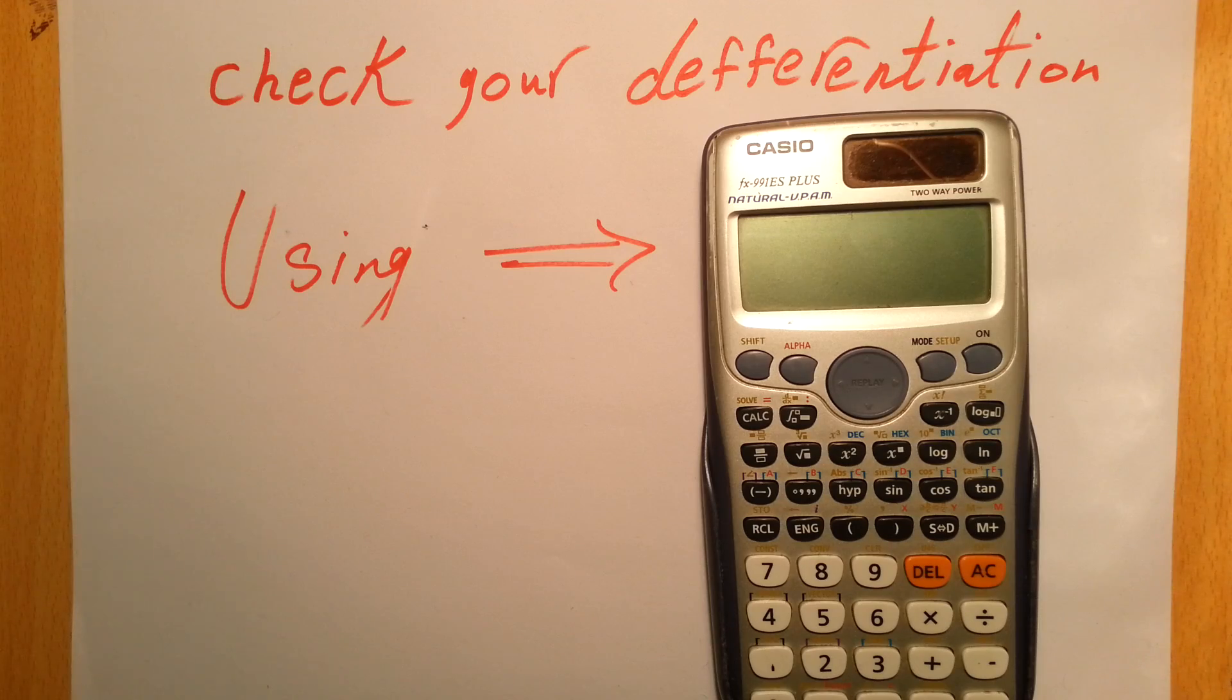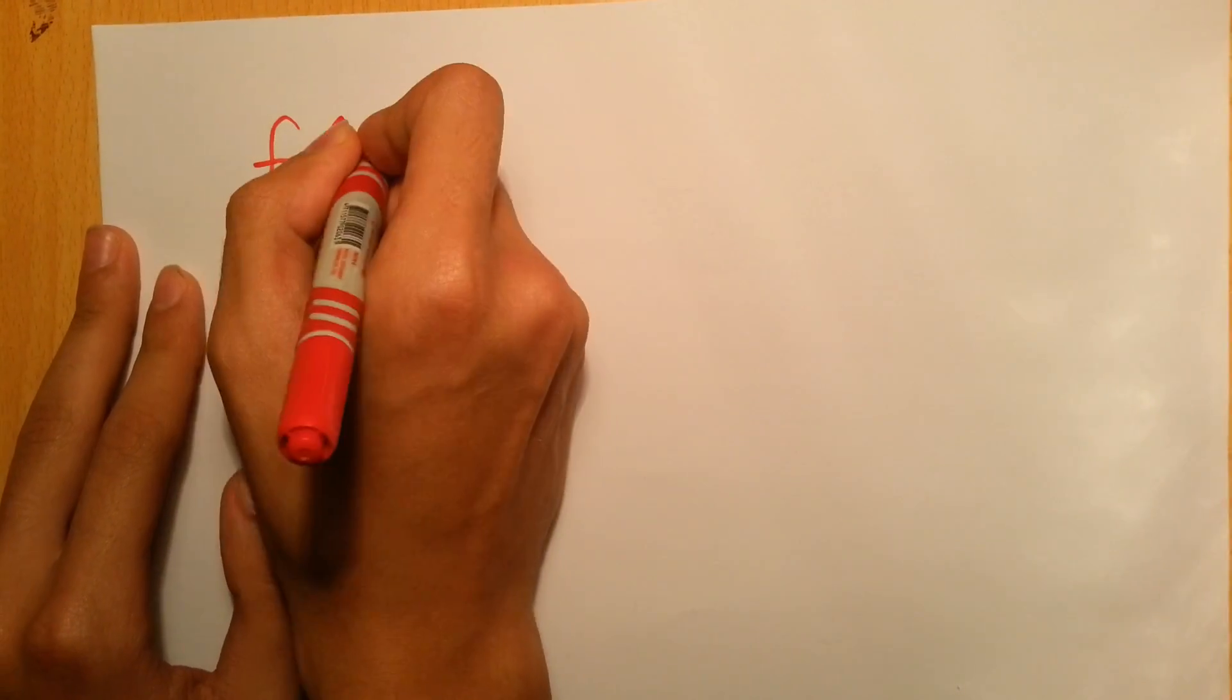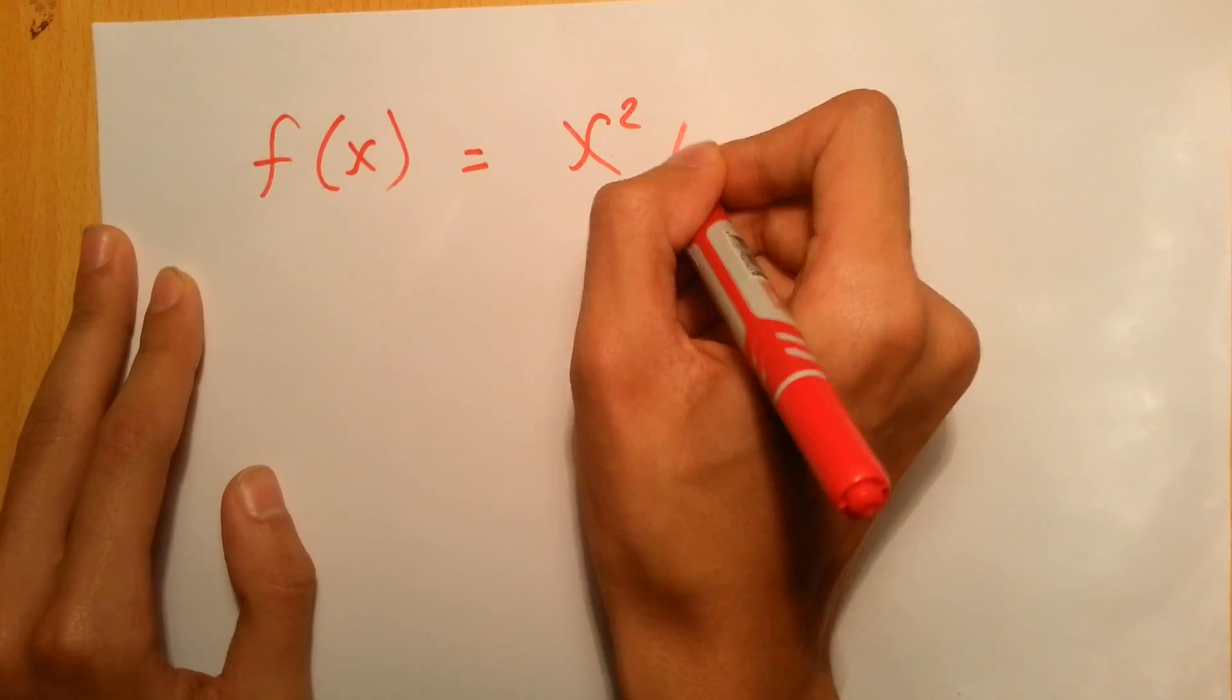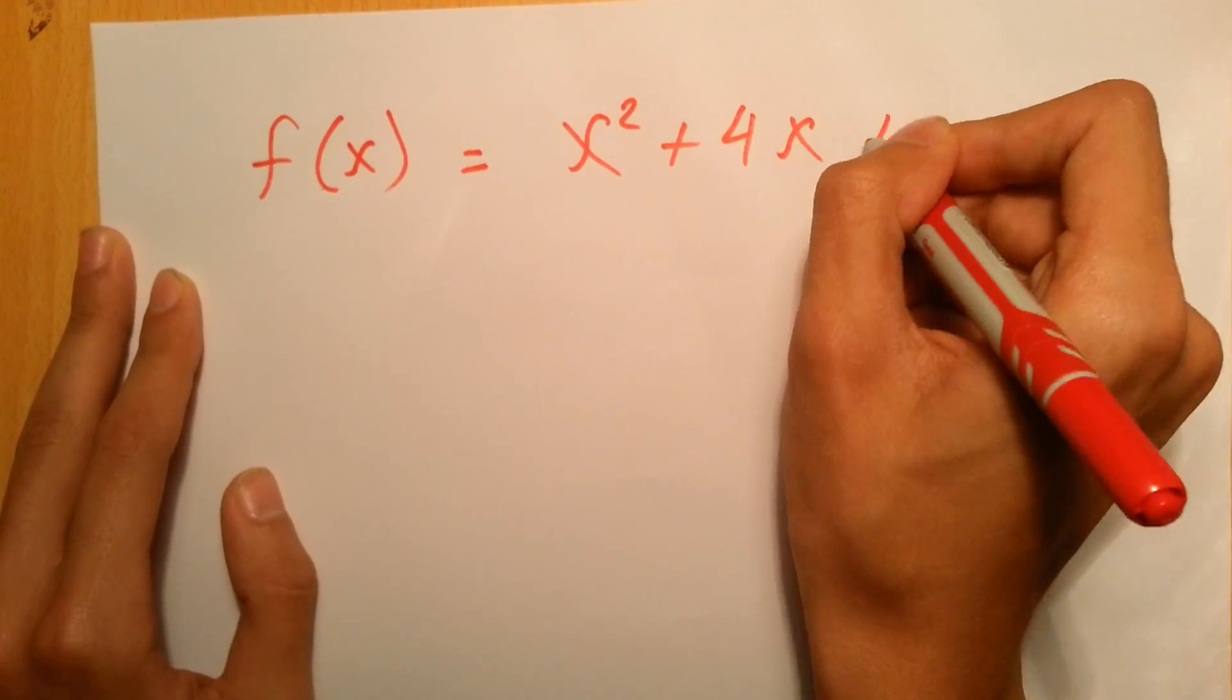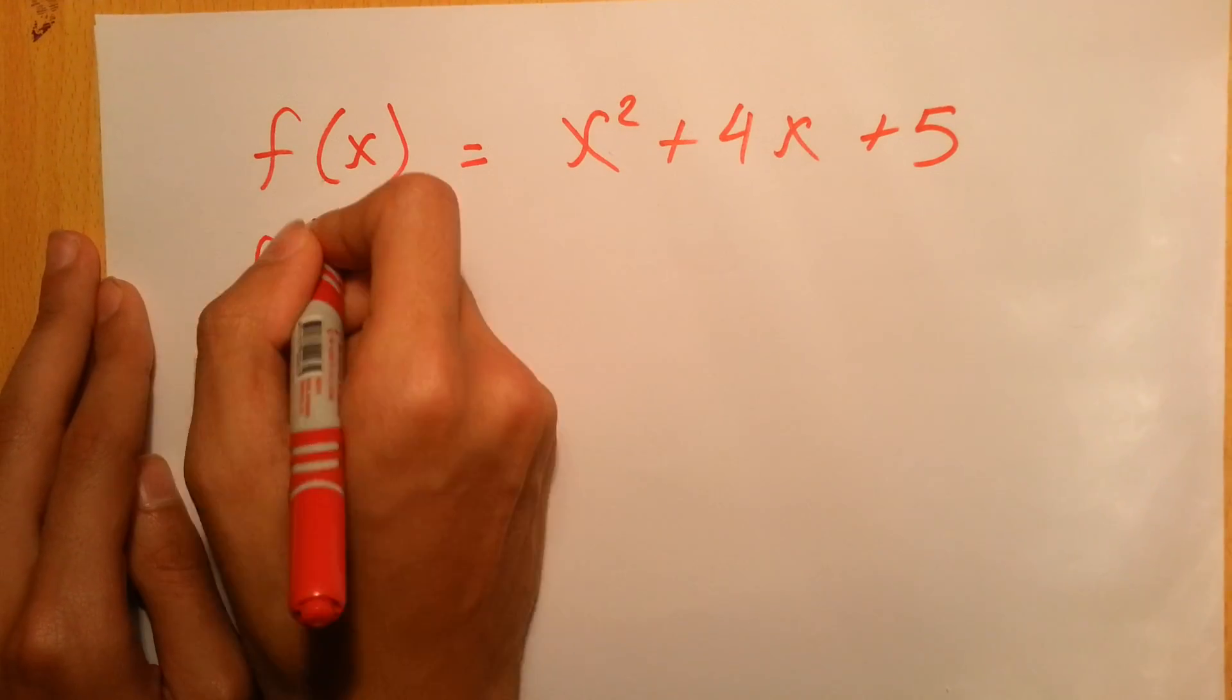Let's start with an easy question. Let's say you have this function f(x) equals x squared plus 4x plus 5. If you want to differentiate this one, the answer is straightforward: 2x plus 4. But let's say you're not sure about that.